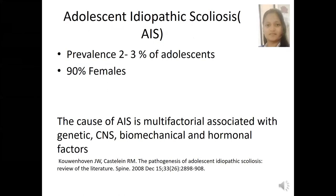AIS is prevalent in two to three percent of adolescents, and more females are affected — ninety percent in females compared to boys. But no single causative factor for the development of idiopathic scoliosis has been identified, so it is termed multifactorial. The causes can be genetic, neuronal, biomechanical, and hormonal. Even melatonin, leptin, and multiple genes have been identified as causative factors in the pathogenesis.